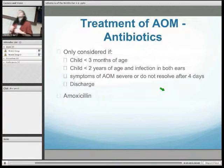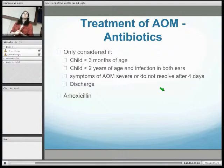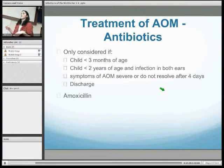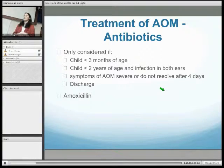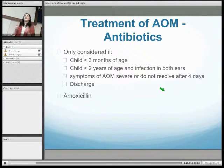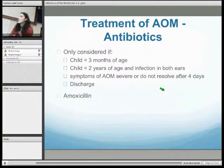For acute otitis media, antibiotics are used if certain criteria are met: if the child is below three months of age, or below two years of age with bilateral infection, or if symptoms are severe, not resolving quickly enough, or if there is discharge occurring. The typical prescription is amoxicillin for around five days. However, the first-line approach is to avoid prescribing antibiotics unnecessarily.